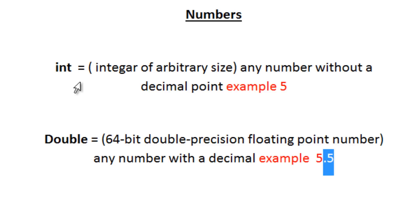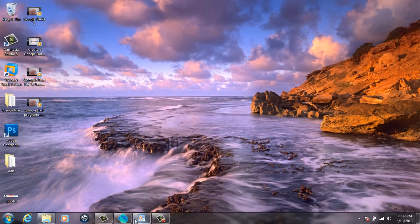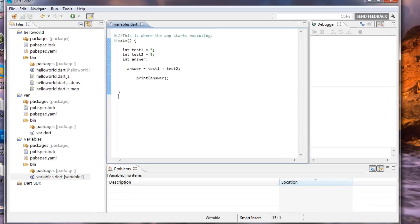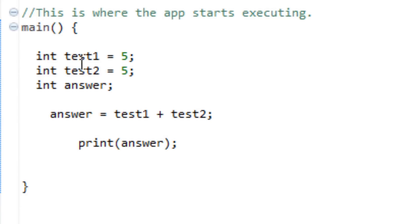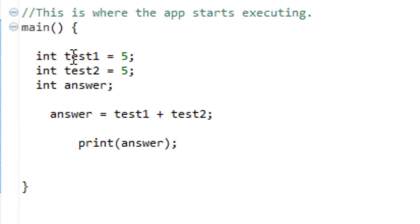So integers we use to initialize a variable with a number value. Let's say if we wanted to initialize two variables int, let those two variables have a number value of 5. I'm going to open up my Dart editor here. As you can see, I used the int to initialize a variable which I called test1, and I gave it a value of 5.